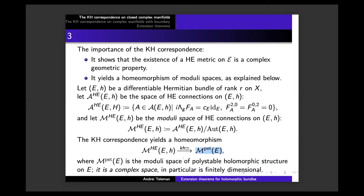This moduli space of polystable holomorphic structures is a complex space — in particular, it is finite-dimensional. Moreover, if our Kähler manifold is algebraic in the sense that G is not only a Kähler metric but also a Hodge metric — for instance when you have an algebraic variety embedded in projective space — then this moduli space will be a quasi-projective manifold. On the left you have an analytical object defined as a moduli space of solutions of complicated PDEs; on the right, a complex geometric object which becomes algebraic if the Kähler manifold is projective algebraic.